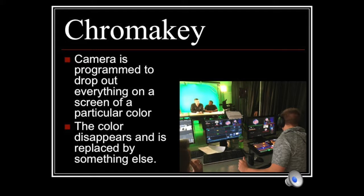Chroma key is just a fancy word for green screen or blue screen. A camera is programmed to drop out everything of a particular color on the screen, so anything in green is dropped out and replaced with whatever is programmed into the camera. In this example from the 2017 MIAA Tournament, a virtual set is programmed into the TriCaster. These are often used for weather maps in the evening news, but may also be used to fill the screen with any other graphic or photo. If you are using a green screen, your talent cannot wear green. One challenge is that lighting is critical — too much and you'll saturate your subjects and get bleed through; not enough, and you'll get really harsh shadows.